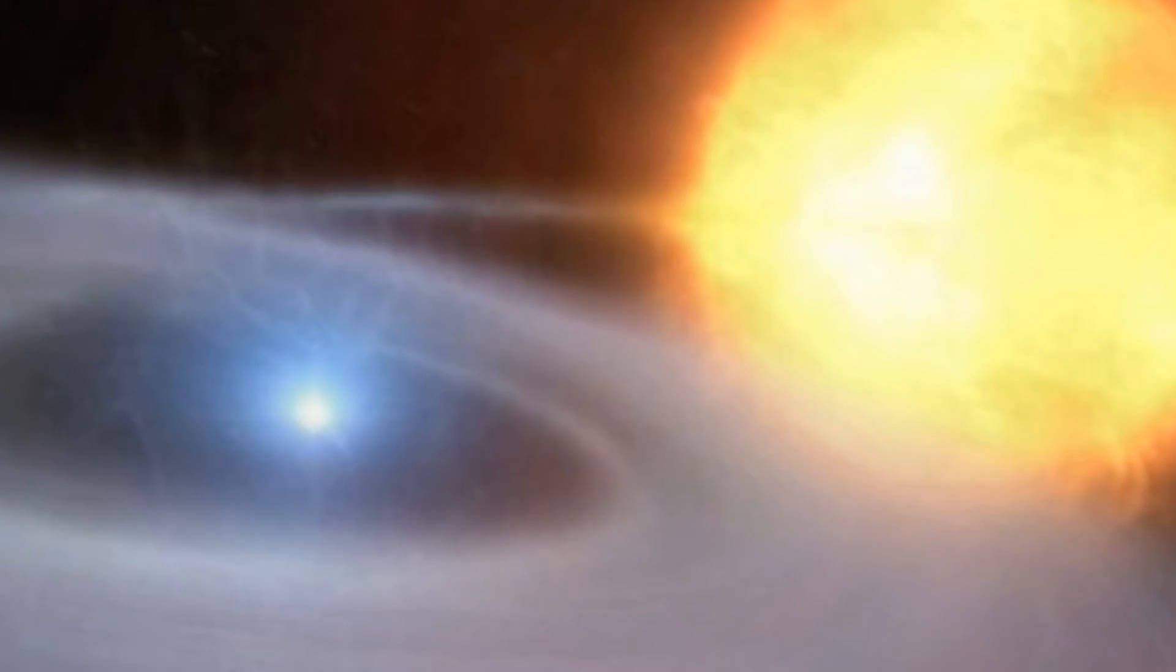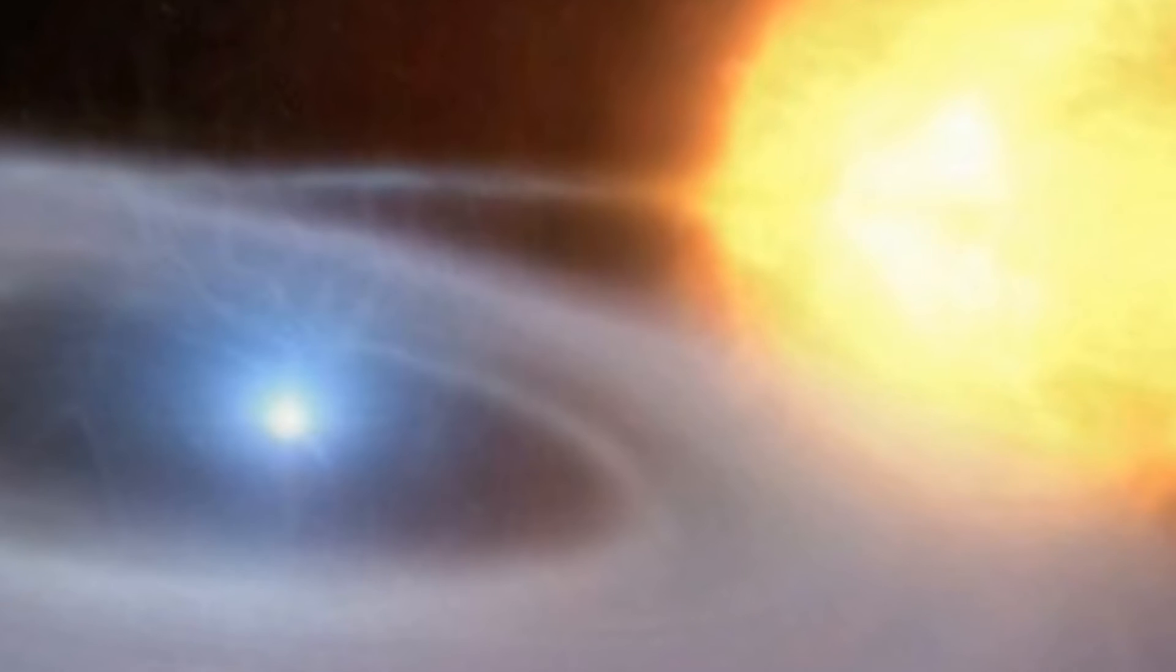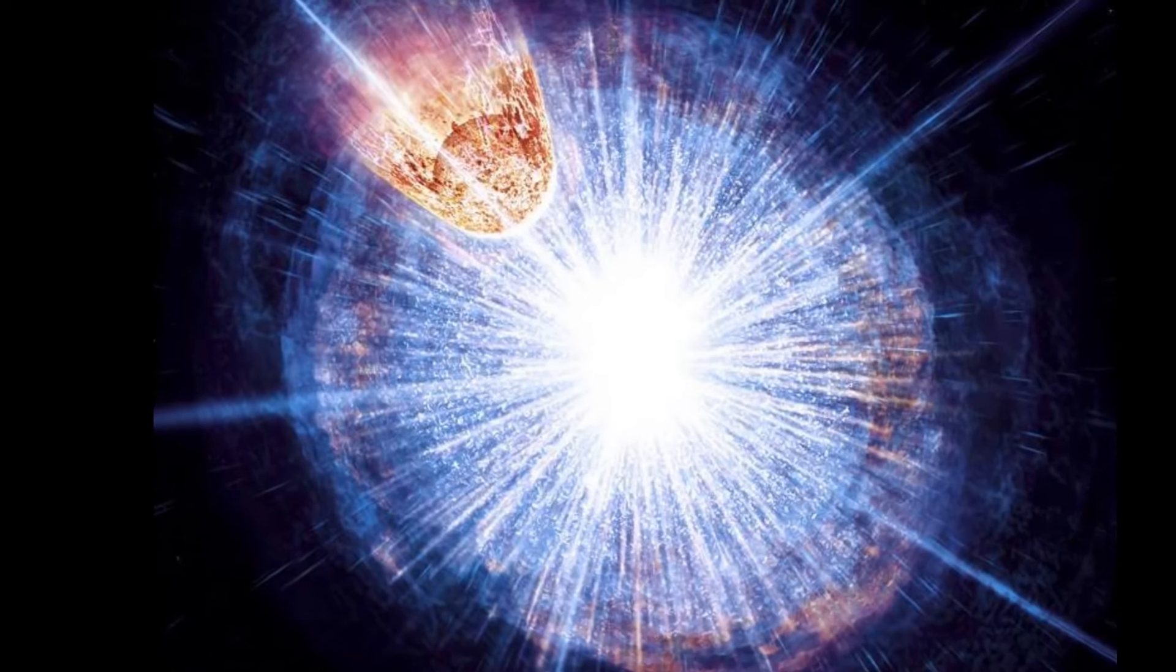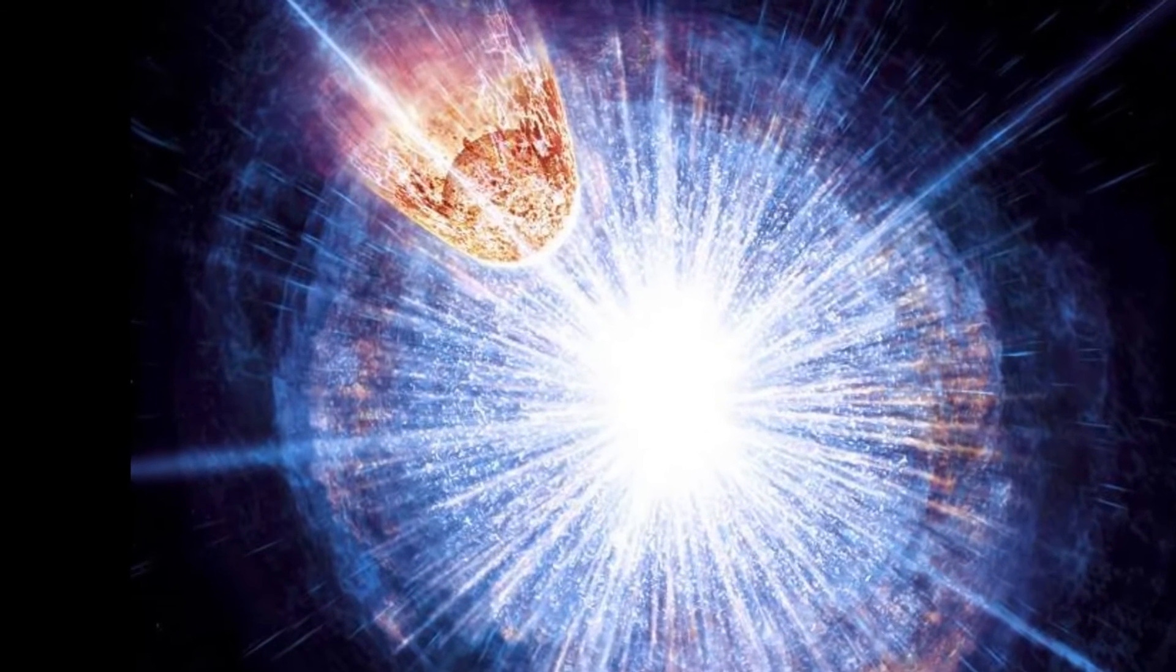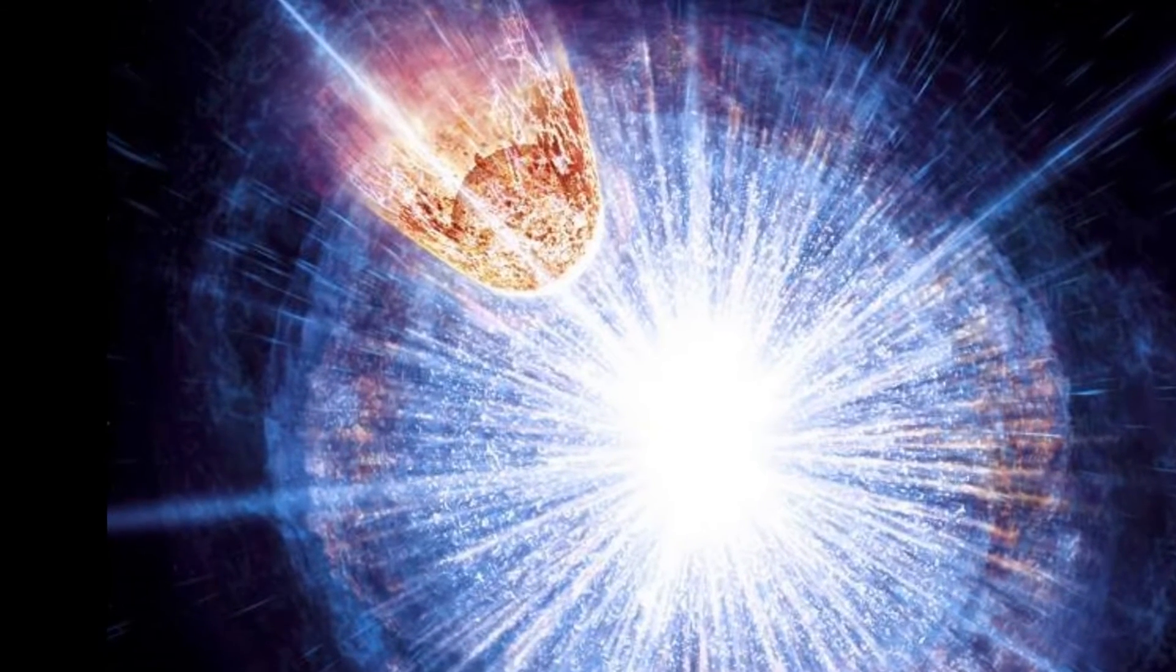This scenario has a carbon-oxygen white dwarf accreting material from a non-degenerate companion until it reaches a critical mass when it explodes as a Type 1A supernova. In this model, the supernova ejecta will then strike the companion, creating a shock which may be visible for the first few days after explosion.